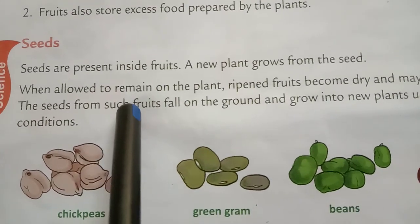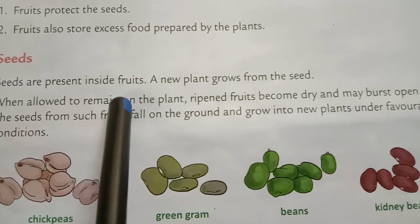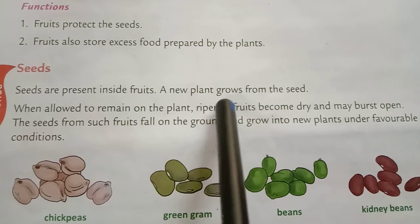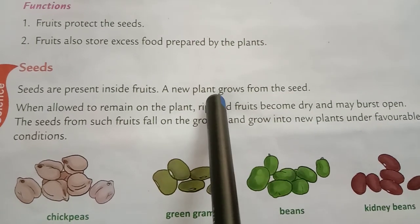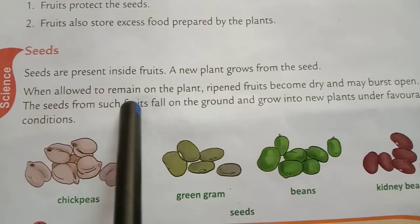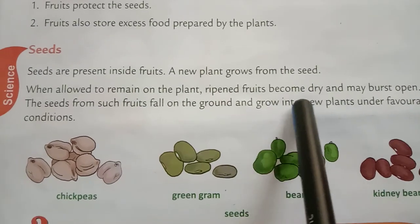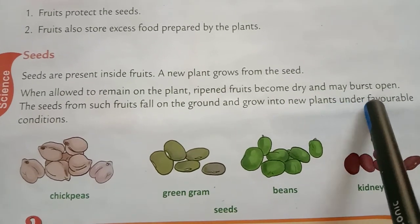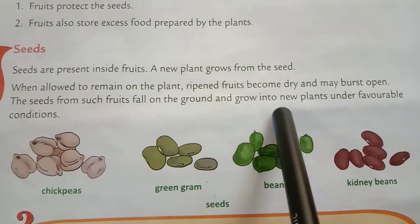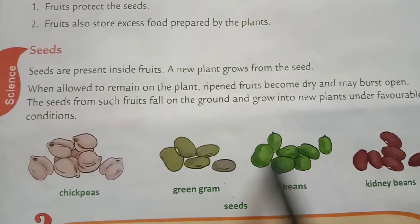Now the last topic is seeds. Seeds are present inside the fruit. A new plant grows from the seed. When allowed to remain on the plant, ripened fruits become dry and may burst open. The seeds from such fruits fall on the ground and grow into new plants under favorable conditions. You can see the picture here.